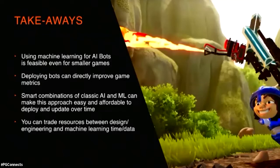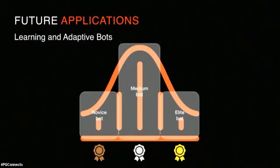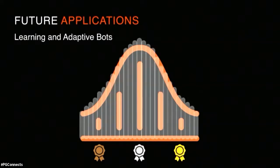Key takeaways: machine learning is viable even for smaller games and can directly improve your game metrics. It's smart to combine classic AI techniques — which your team likely already has — with machine learning in a hybrid approach, balancing your engineering and ML investment. Looking further ahead, you're not constrained to one bot type. You could train bots on different player segments — novice, intermediate, and elite — and serve skill-matched bots to players. Long term, with only 10 hours of gameplay needed, you could even train bots to represent individual players, like drivatars in motorsport games or Shadow Play in Killer Instinct.